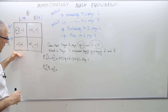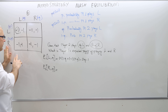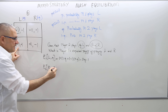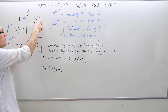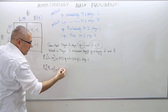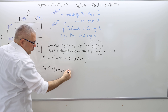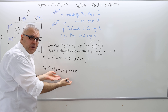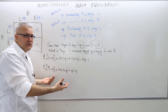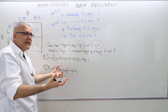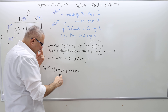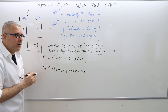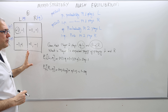What about the expected payoff of playing right? If player one plays right, he gets plus one only if player two plays right, which happens with one minus q probability. With the remaining probability q, player one gets minus one. So his expected payoff is (1-q)(1) + q(-1), which is one minus q minus q, giving one minus 2q.